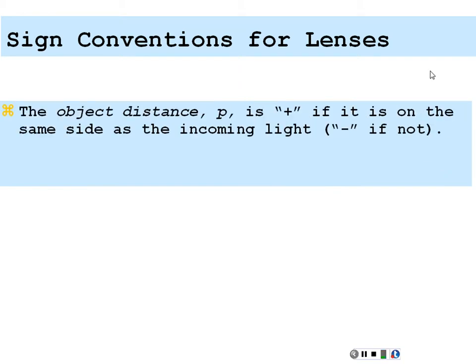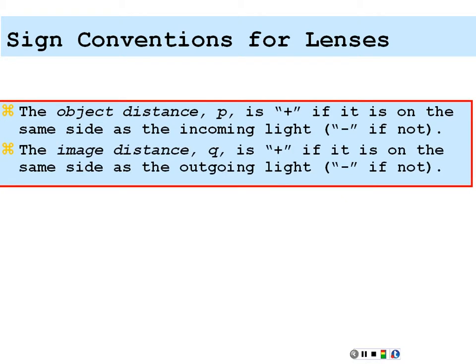Sign conventions for lenses: the object distance P is always positive if it is on the same side as the incoming light, negative if not. The image distance Q is always positive if it's on the same side as the outgoing light, negative if not. This is the same for mirrors, lenses, or refractive surfaces — if you're on the same side as the incoming light, your object distance is positive; if you're on the same side as the outgoing light, your image distance is positive. It's as simple as that.